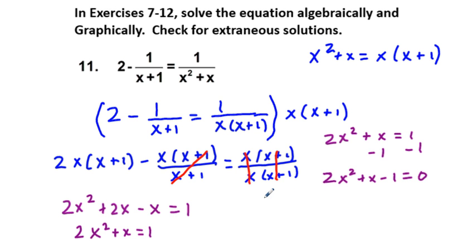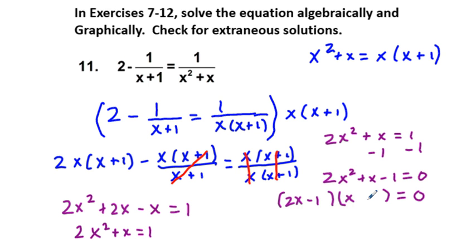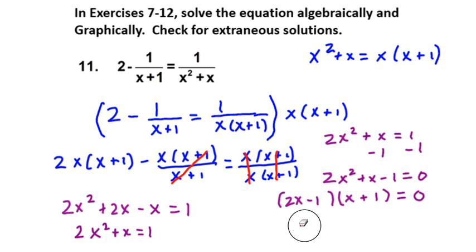Now we'll try to factor this — and if not able to factor, we could use the quadratic formula. What are the factors of 2x squared? How about 2x and x? And the factors of negative 1 would be negative 1 times 1. We put negative 1 here and plus 1, because we need opposite signs. In this case, negative 1 times x is negative x, and 2x times 1 is positive 2x. Adding negative x and 2x together gives us positive x — so this is a successful factoring.